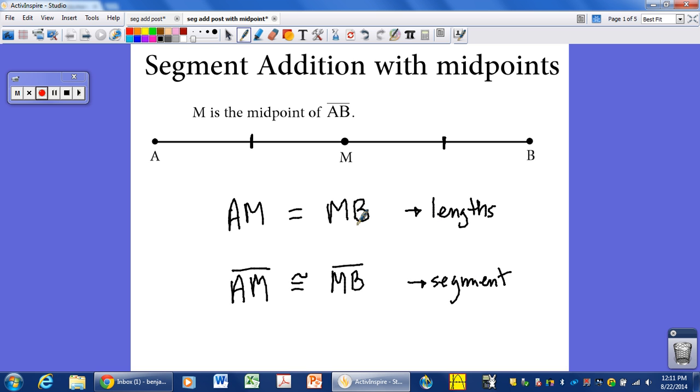That's an M, by the way. So two different types of writing. Here we have equality of lengths. The length of AM is equal to the length of MB. Or segment AM is congruent to segment MB. And that's talking about this actual thing is equal to this actual thing, where this length is equal to this length is what this is talking about. So that's the relationship if you know that something has a midpoint.